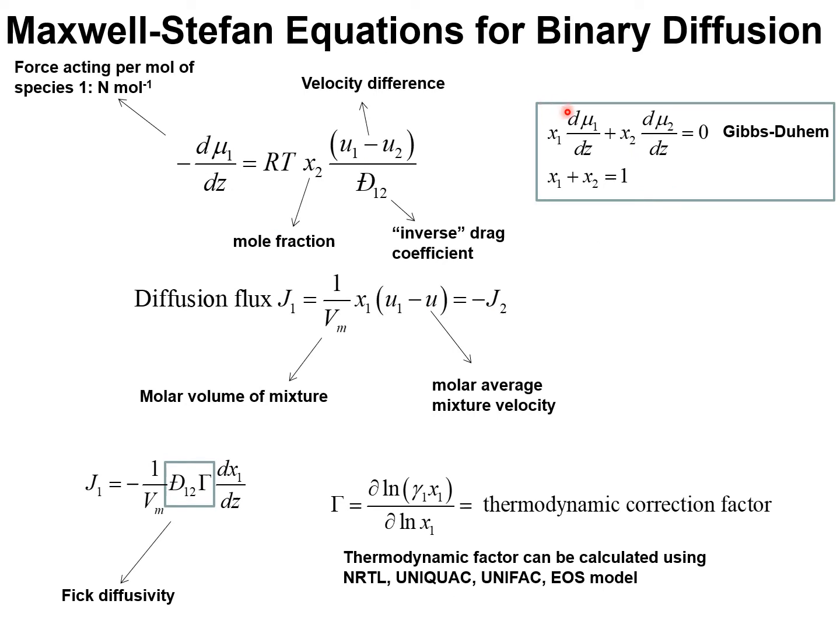Let's begin by analyzing diffusion in binary mixtures of components 1 and 2. Let U1 and U2 represent the velocities of motion of components 1 and 2 in a laboratory fixed reference frame. U is the molar average mixture velocity. Since the chemical potential gradients are constrained by the Gibbs-Duhem relationships, only one of the chemical potential gradients is independent. The mole fractions sum to unity and therefore there is only one independent measure of composition.